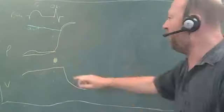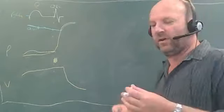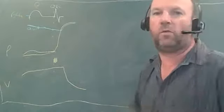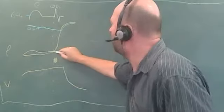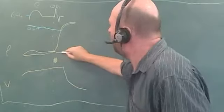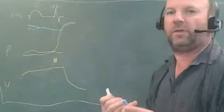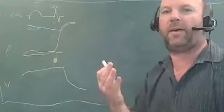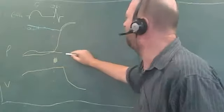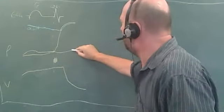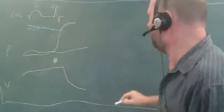Blood is rushing out and being ejected. Meanwhile, the mitral or tricuspid valve is still shut, so blood can't flow into the ventricle and there's no backflow. However, the atria are still receiving blood, so atrial pressure is slowly rising during this period.